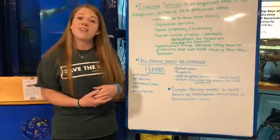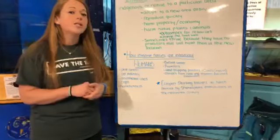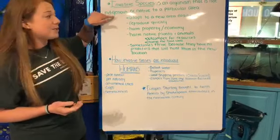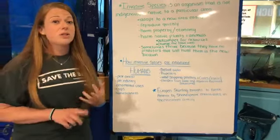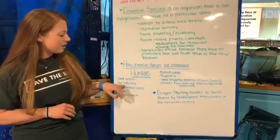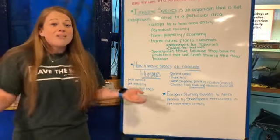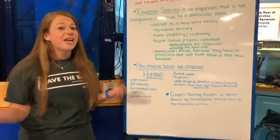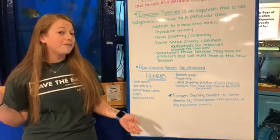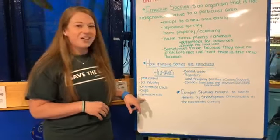Purposeful introductions include pest control — humans thought bringing in a new animal species might help cut down on a pest problem, but that invasive species adapted quickly and caused harm to the economy and habitat. The pet industry can be another way invasive species are introduced, as can ornamental uses — people thought plants or animals looked pretty and brought them over to decorate their lawns or homes. Some non-native crops were also introduced, and another reason is homesickness.